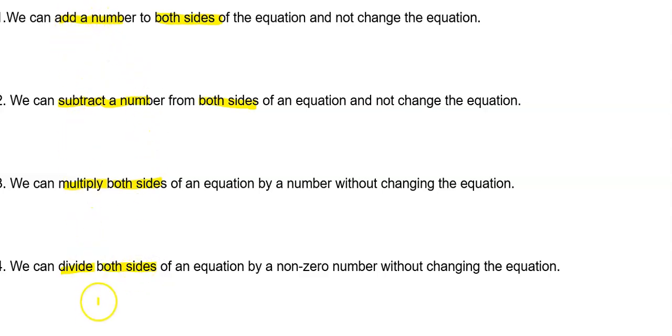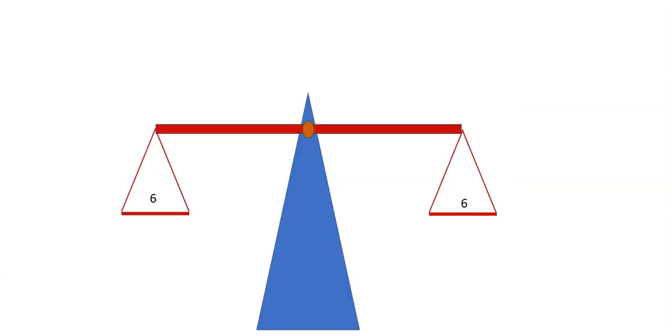So these four operations, plus, minus, times, and divide, have to be done to both sides. We can never just do one operation to add a number to the left-hand side without doing anything to the right-hand side. Okay, so equations can be considered as a balanced scale.